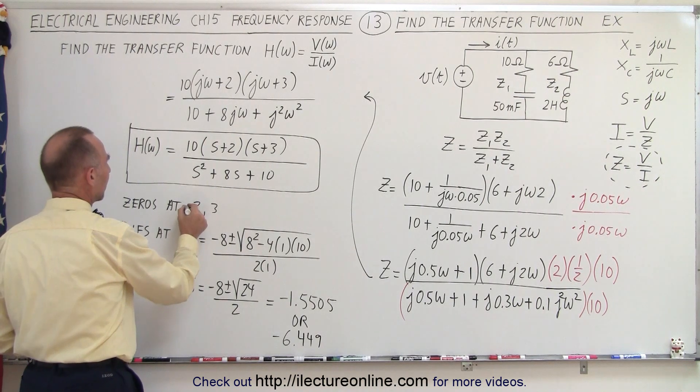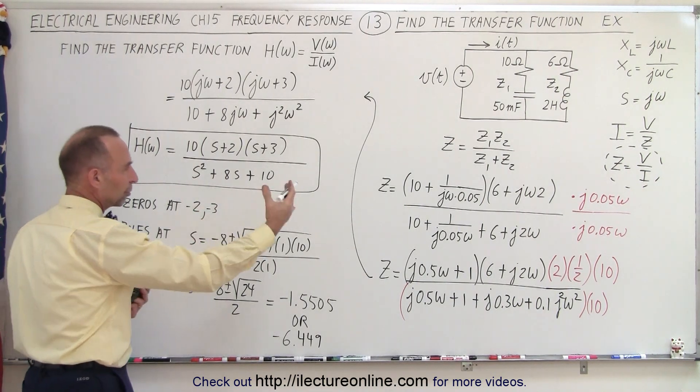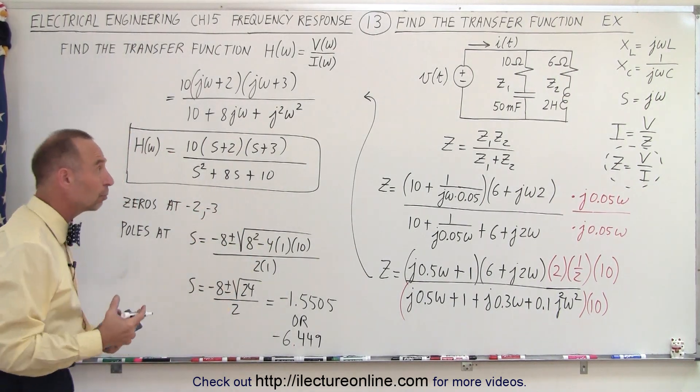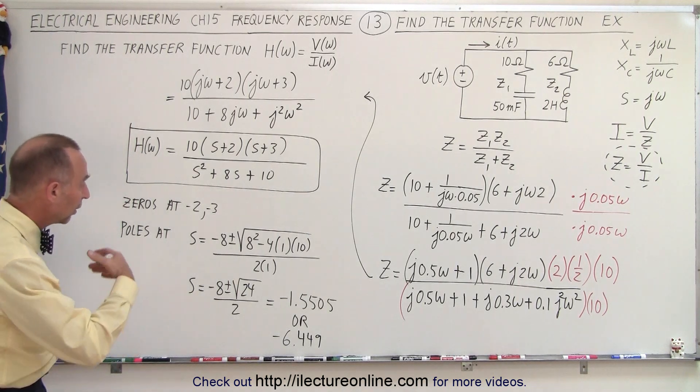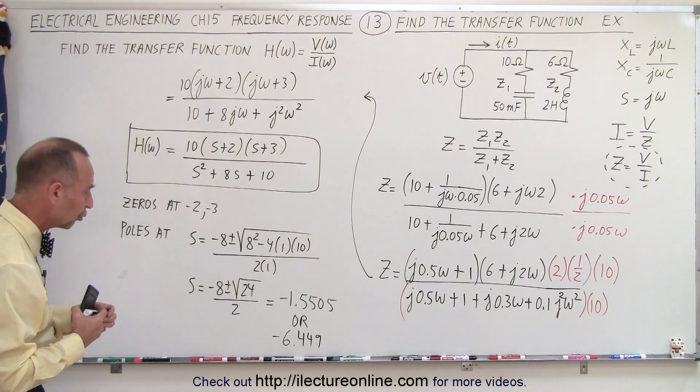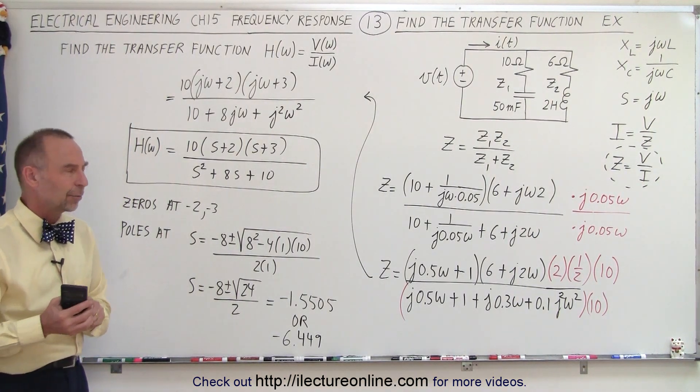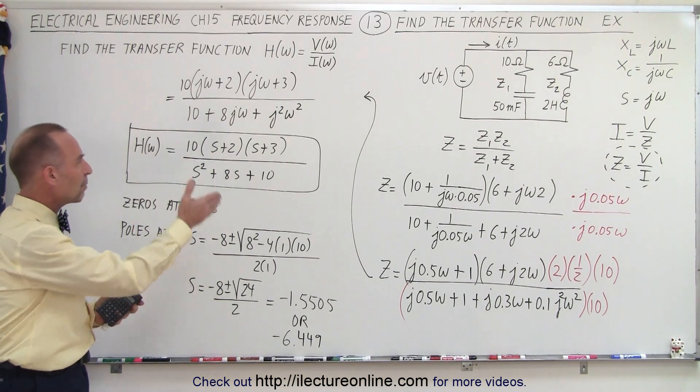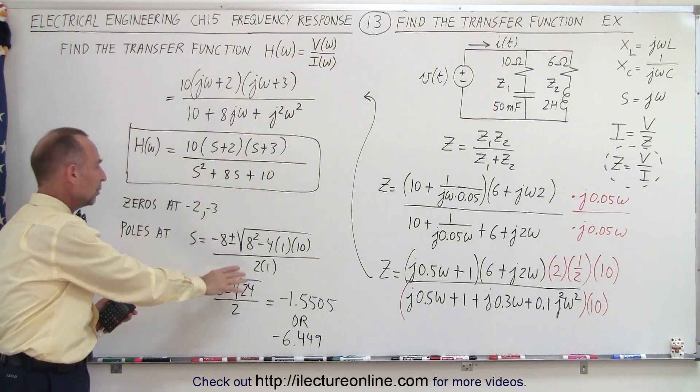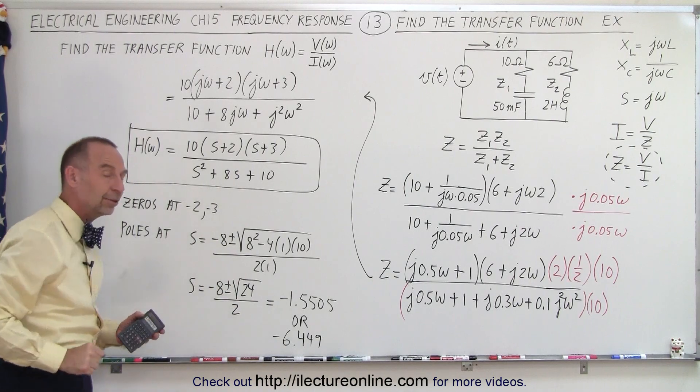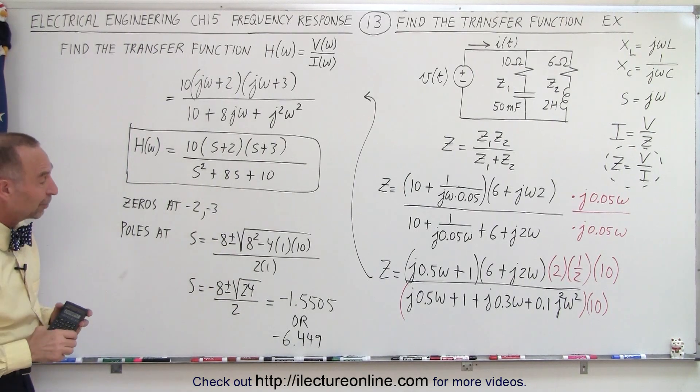Of course, again, I can say minus 2, minus 3, but then if I actually put that onto the Bode plot, or onto the frequency plot, those become positive numbers, and we'll show you, in the next example, how that works. But at least, that's how we find the transfer function, and we find the zeros, and we find the poles. And that is how it's done.